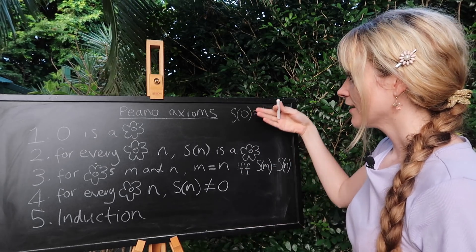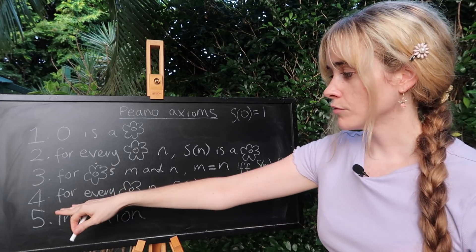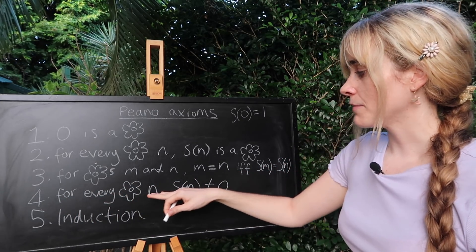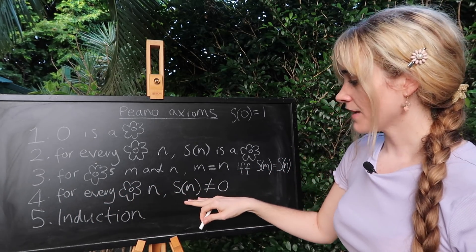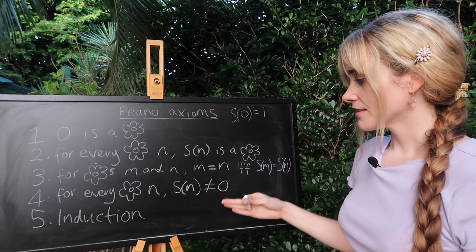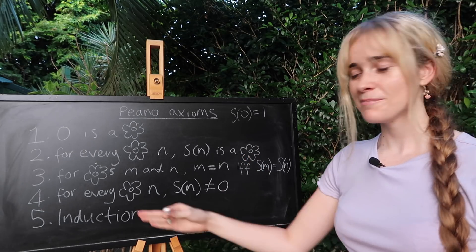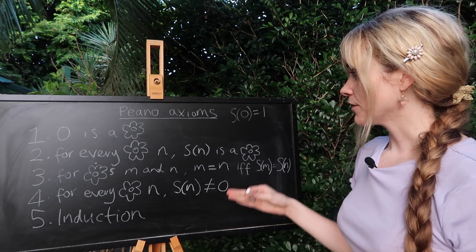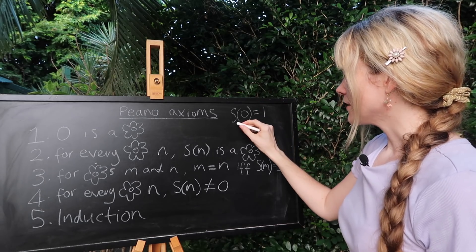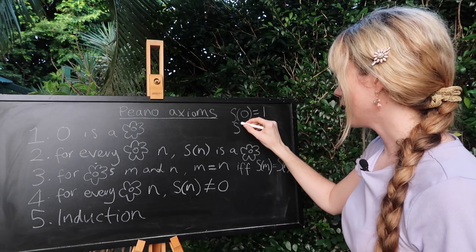So that helps us define recursively what our numbers are going to be. Our fourth rule here is that for every natural number n the successor of n can't be zero. And that's alright. It kind of amongst other things rules out any of the negative numbers being natural numbers.